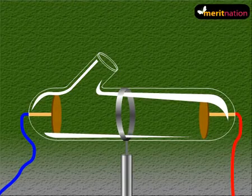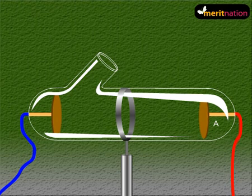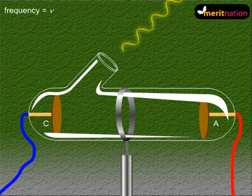Let me first keep the collector plate A at some positive accelerating potential with respect to the emitter plate, that is C. Now let's allow light of fixed frequency nu and a fixed intensity, let me call it I, to fall upon the emitter.